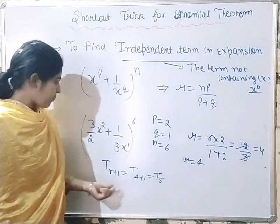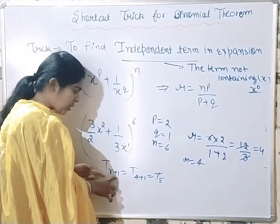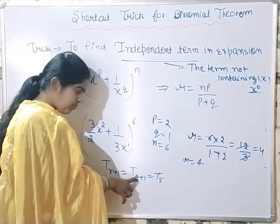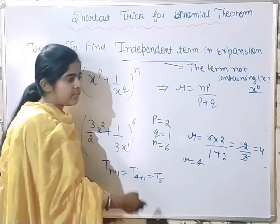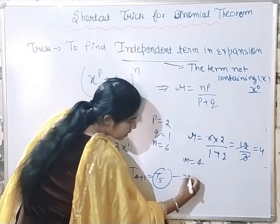You know how we write the general term: t(r+1) equals t(4+1), that means t5. So this t5 term is our independent term.